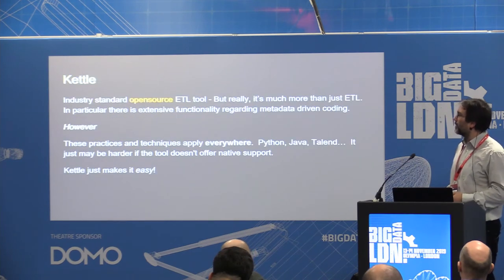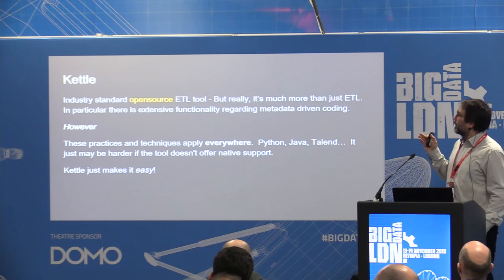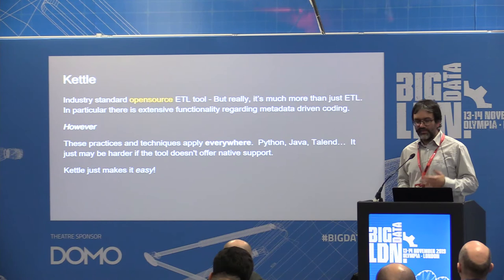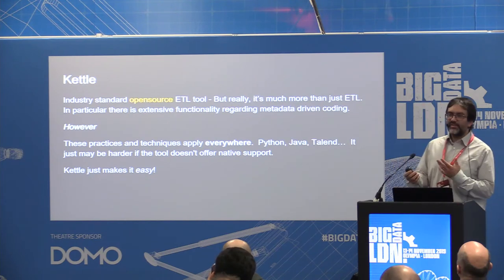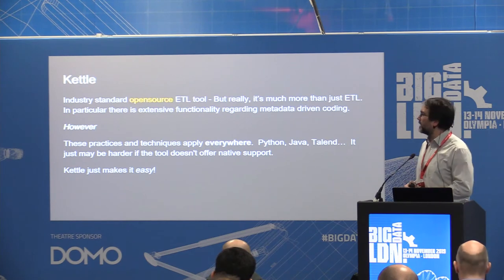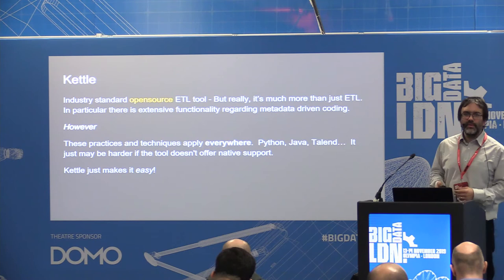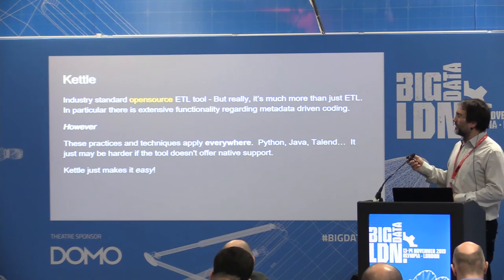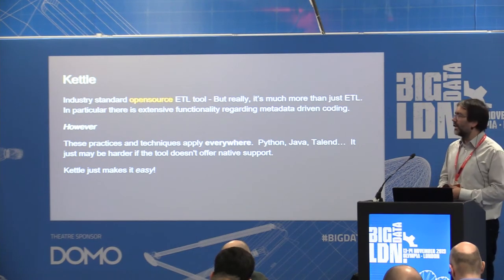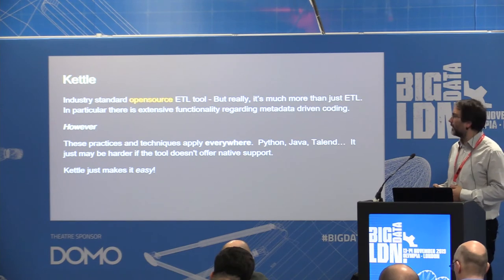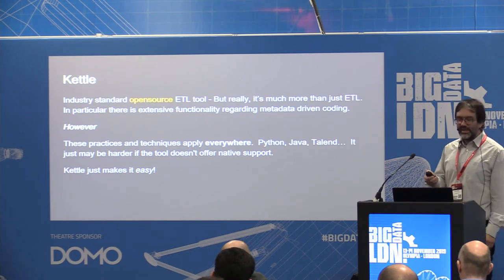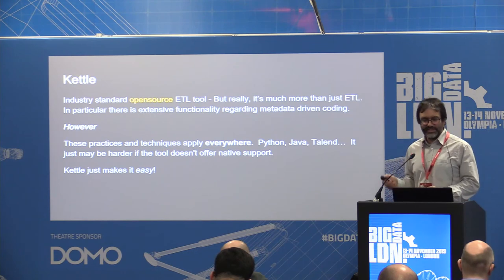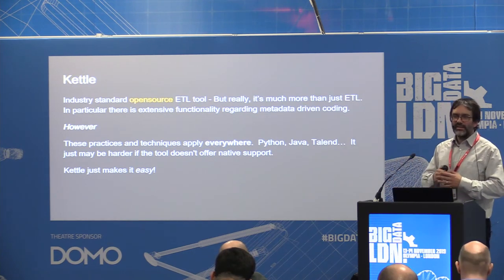Kettle is fundamentally a very metadata-driven tool. When you build transformations and jobs, that is metadata that describes how your jobs work. There are features like metadata injection which enable you to write dynamic transformations. It's very good at dealing with change. However, all of these practices of writing code that can be flexible and understands the metadata in the incoming stream — that is only a technique, and it is applicable everywhere. You don't have to use Kettle. You could write metadata-driven solutions in Python, Talent, or whatever. It's just that Kettle makes it really easy because it's fundamentally part of the product. But it's definitely a technique that needs to be considered across your whole stack.